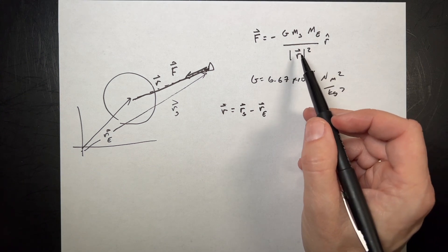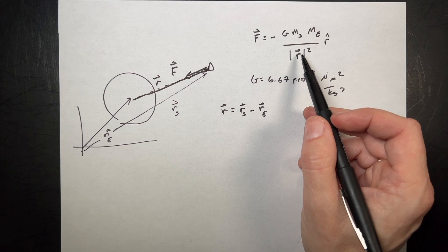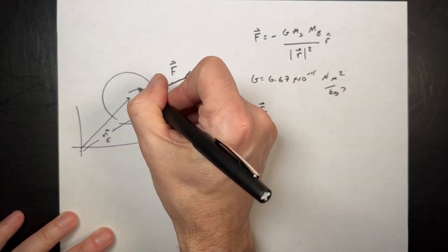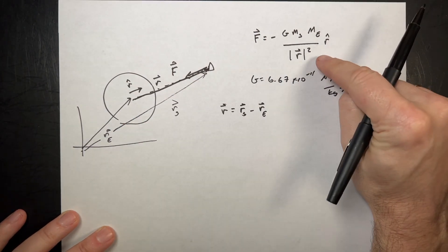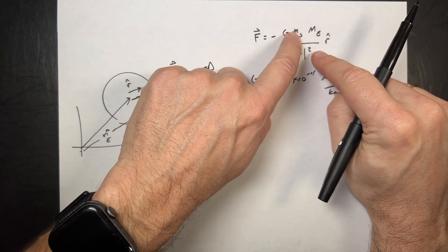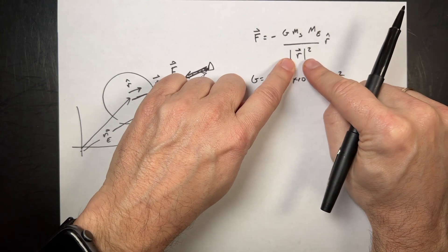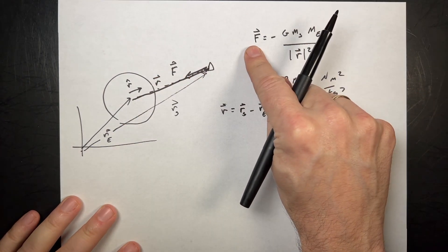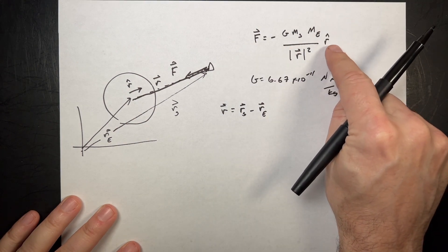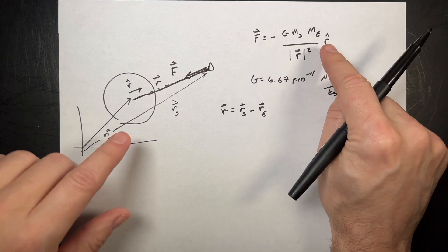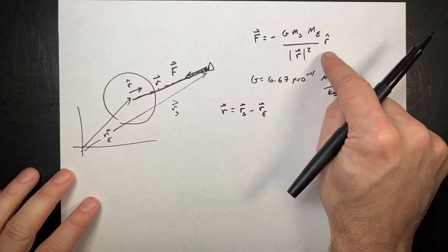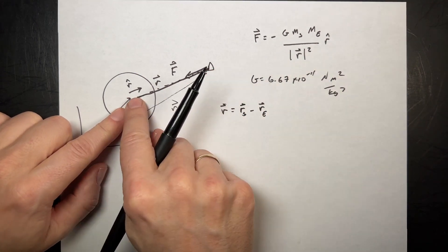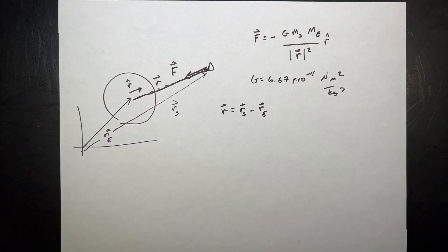We can do all that vector calculation in Python. R hat is a unit vector pointing in the same direction but with magnitude 1. The problem is that G, M, M, and the magnitude of R are all scalar values and I need a vector value for the force. So I need this R hat to turn this back into vectors. This negative sign says the vector force on the spacecraft is in the opposite direction of the vector from center to spacecraft.